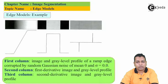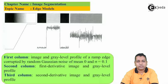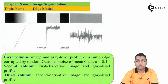The second column represents the first derivative of the image and the gray level profile. The third column represents the second derivative image and the gray level profile. In Figure B, again we have three columns. The first column shows the image and gray level profile of the ramp edge corrupted by random Gaussian noise with mean μ=0 but this time σ=0.1, compared to the earlier noise-free case. The second and third columns again represent the first and second derivatives.